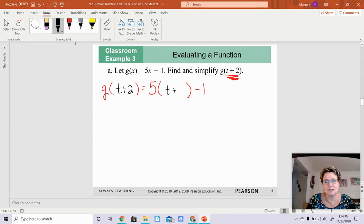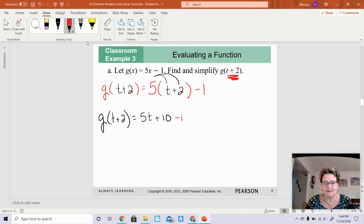Now, you are going to have to distribute the 5 across the t plus 2. So my function g(t plus 2) equals 5 times t is 5t. 5 times 2 is 10. And then don't forget we have a minus 1 on the end. 5t can't do anything with that, but 10 plus negative 1 is 9. So there's your function. g(t plus 2) is equal to 5t plus 9.